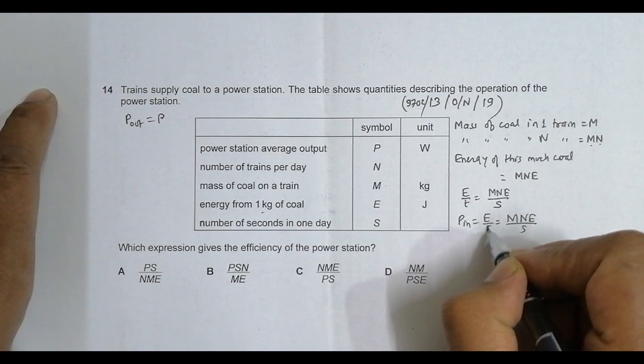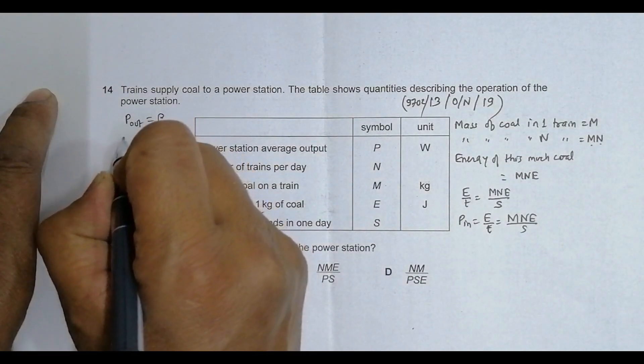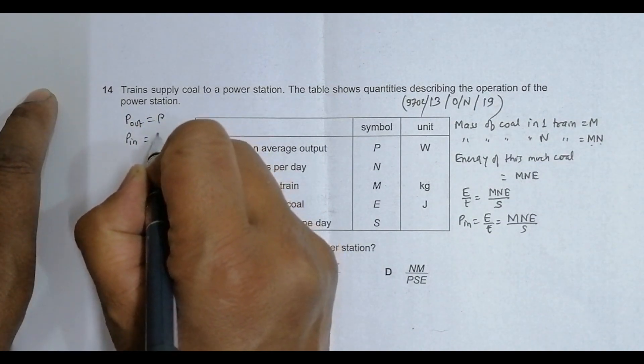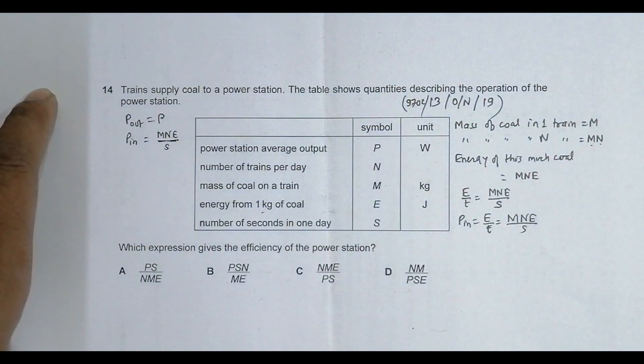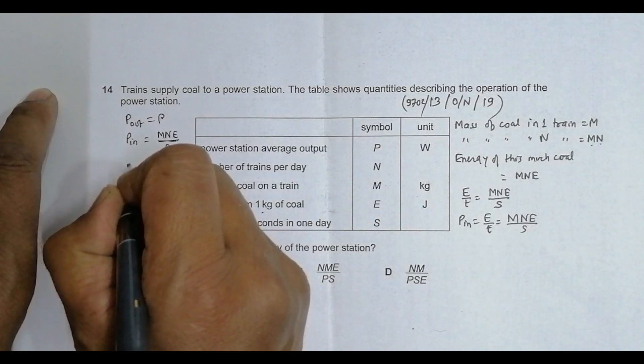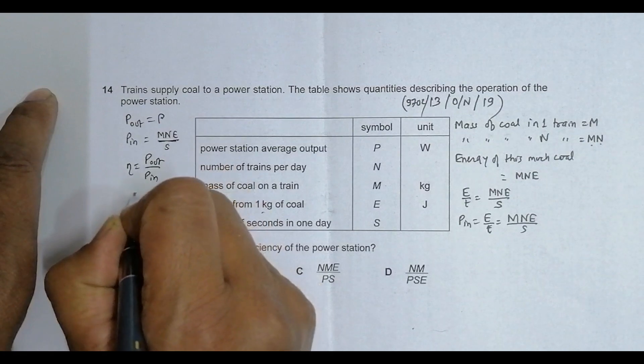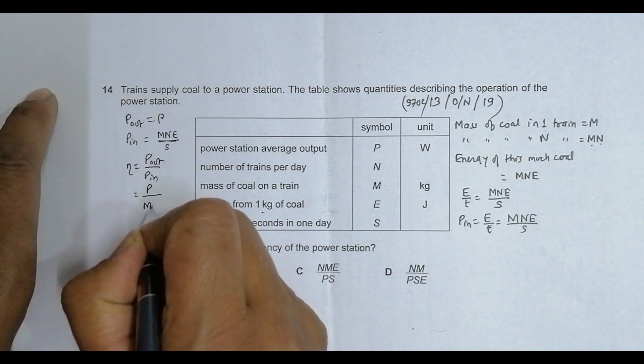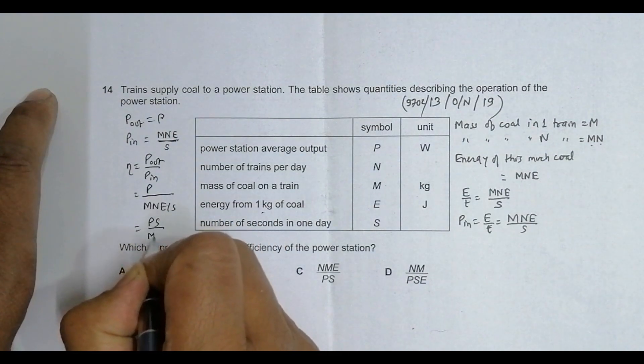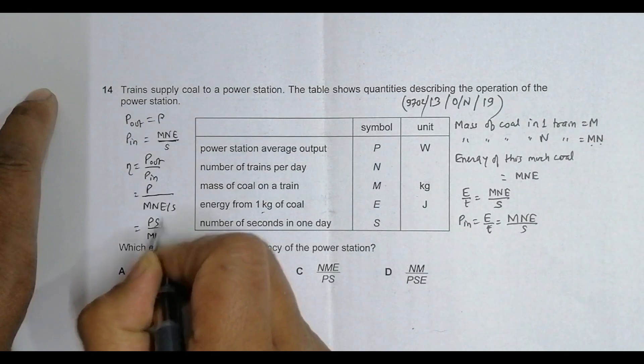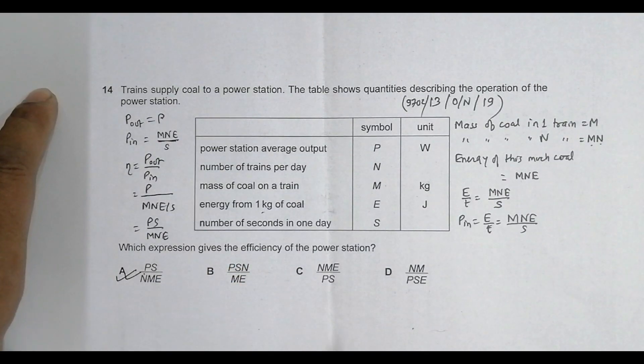We have power output P here. Power input equals MNE by S. So the efficiency eta equals power output by power input, which equals P divided by MNE/S. This gives us PS by MNE. The answer is choice A.